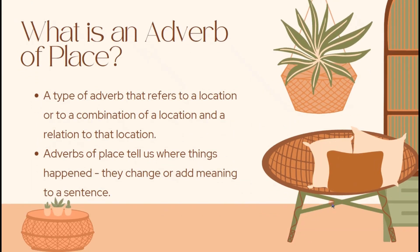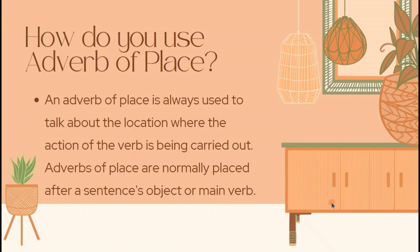What is an adverb of place? It is a type of adverb that refers to a location, or to a combination of location and relation to that location. Adverbs of place are always used to talk about the location where the action of the verb is being carried out. Adverbs of place are normally placed after a sentence object or main verb — always remember that.